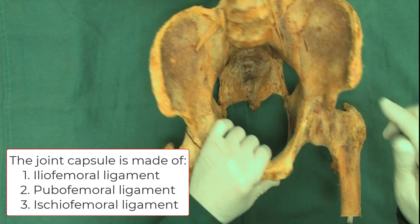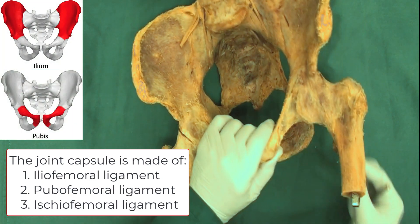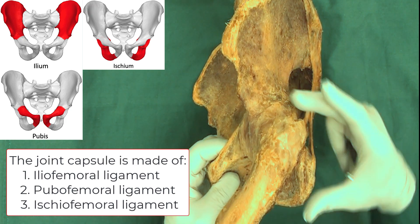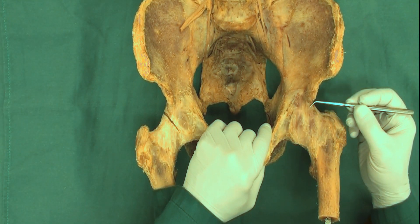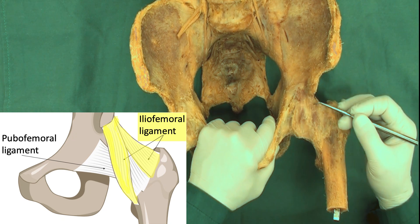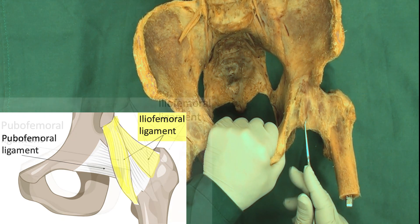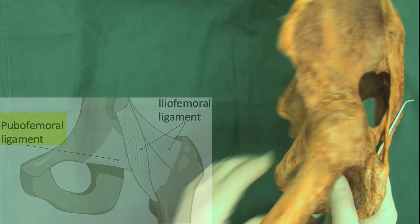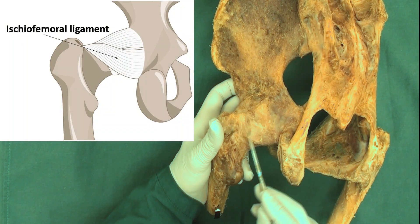To remember the names, recall that the hip bone is made by three parts: the ilium, the pubis, and the ischium. If I point to this part of the joint capsule here, that is referred to as the iliofemoral ligament, which is a Y-shaped ligament and one of the strongest ligaments in the human body. This part of the joint capsule is referred to as the pubofemoral ligament. Then on the posterior side, this part is referred to as the ischiofemoral ligament.